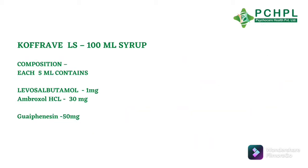The second product is Cough Rave LS. The composition — it is again a 100 ml syrup. Each 5 ml contains Levosalbutamol 1 mg, Ambroxyl hydrochloride 30 mg, and Guaifensin 50 mg. We discussed a similar composition earlier, but it had Terbutaline; here we have Levosalbutamol instead.